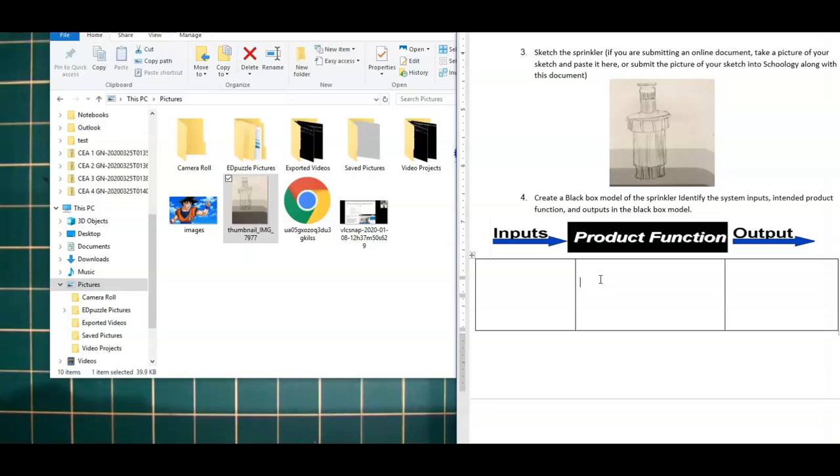Well, the function is to spray water on the grass. And so what has to go into this system to make that happen? And the answer should be obvious. And it shouldn't just be one thing. There should be two or three things going in.